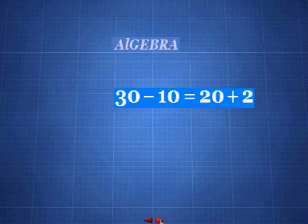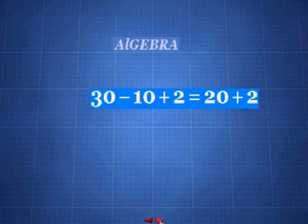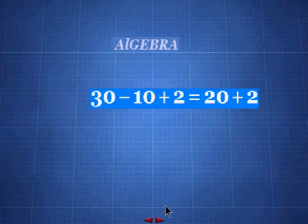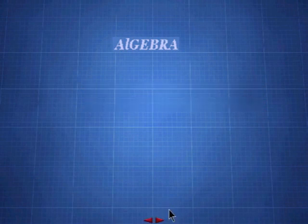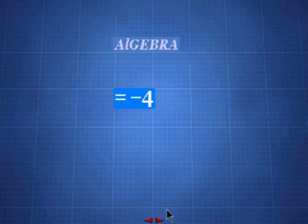Any operation done on one side of an equation must be done on the other side as well. An equation is still valid when the same quantity is added, subtracted, multiplied, or divided on both sides. From that principle, we can derive two helpful procedures to help us solve an equation.